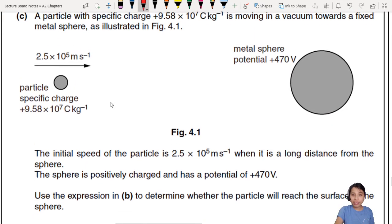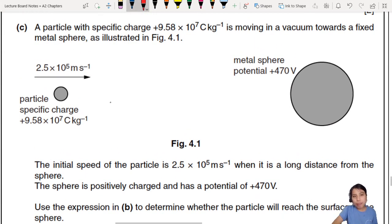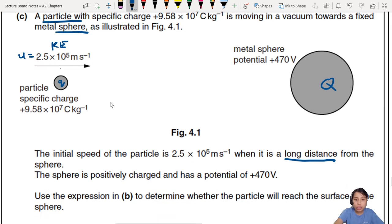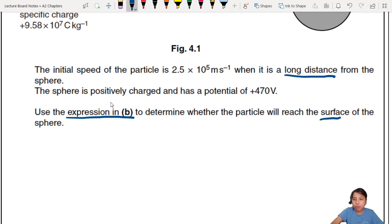Beautiful. A particle with a charge - they call it a particle, so we assume it's like a point particle. It has a certain charge Q, small Q. It moves in vacuum towards a metal sphere. The initial speed of the particle is given to us when it is far away. So you start off with some kinetic energy here. The sphere is positively charged and has a potential of 470 volts. Use the expression in B - what did I tell you? Use the expression in B to determine whether the particle will reach the surface of the sphere or not.